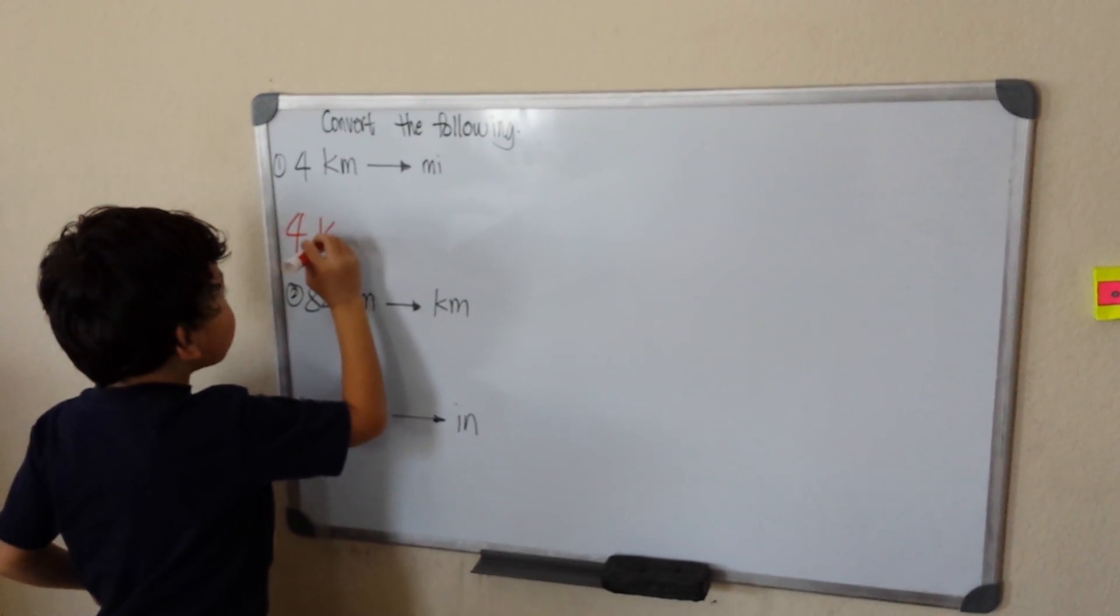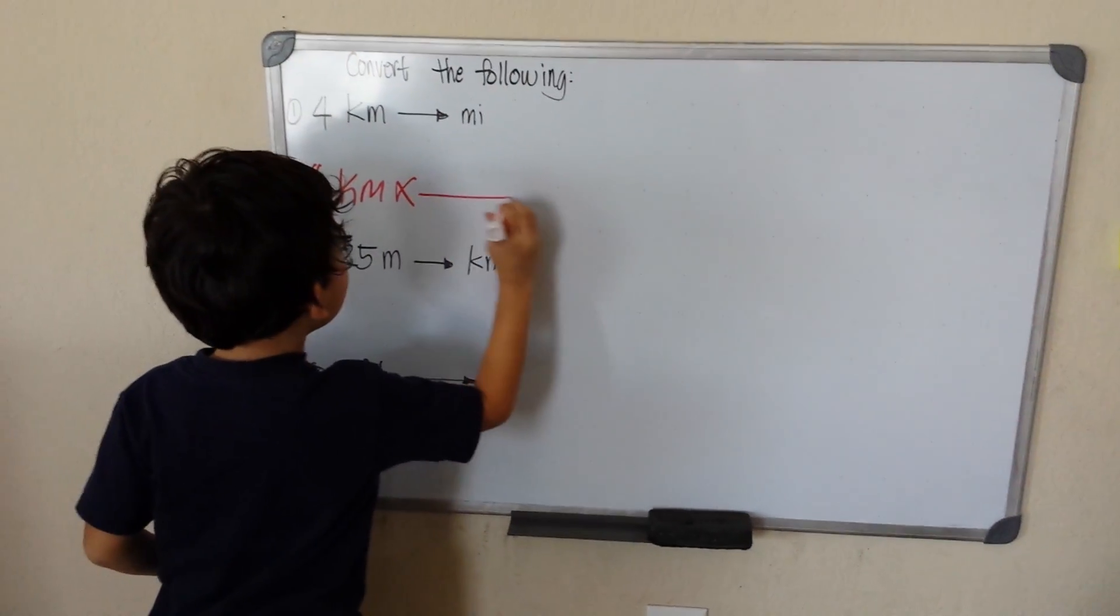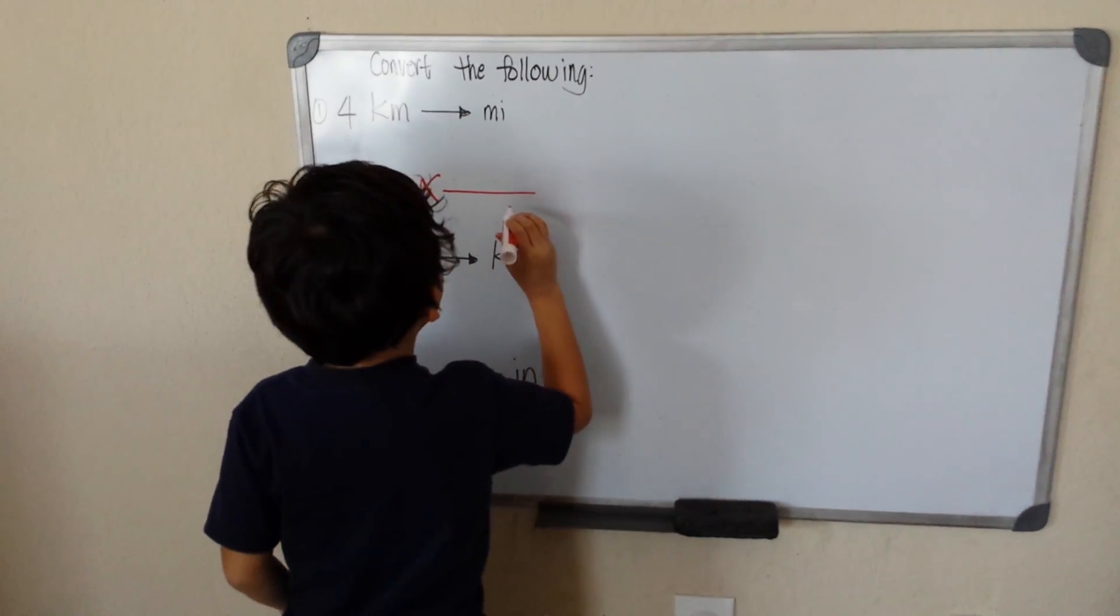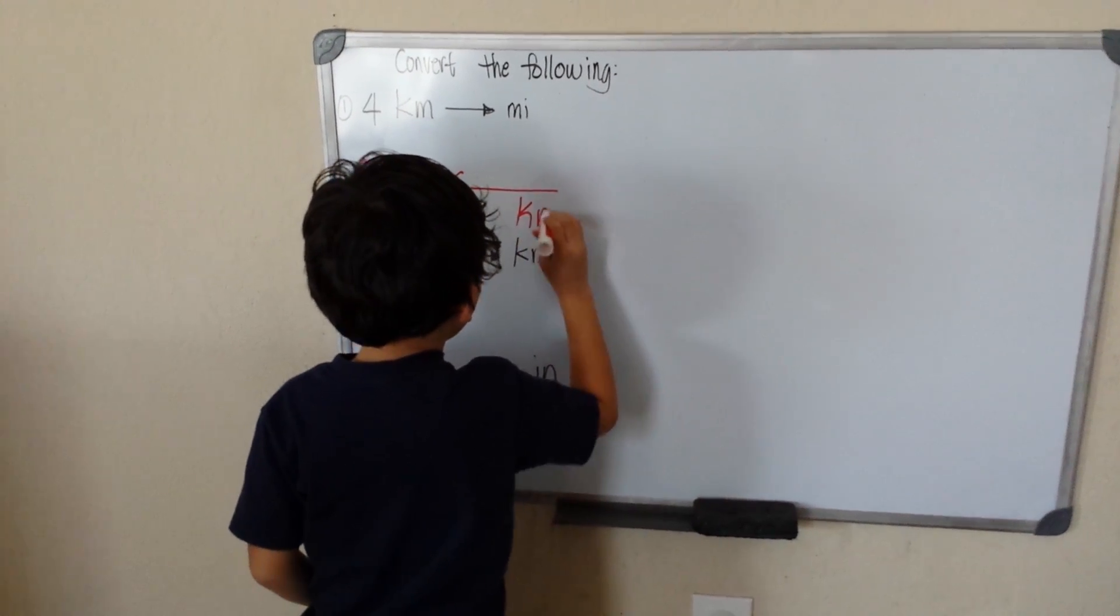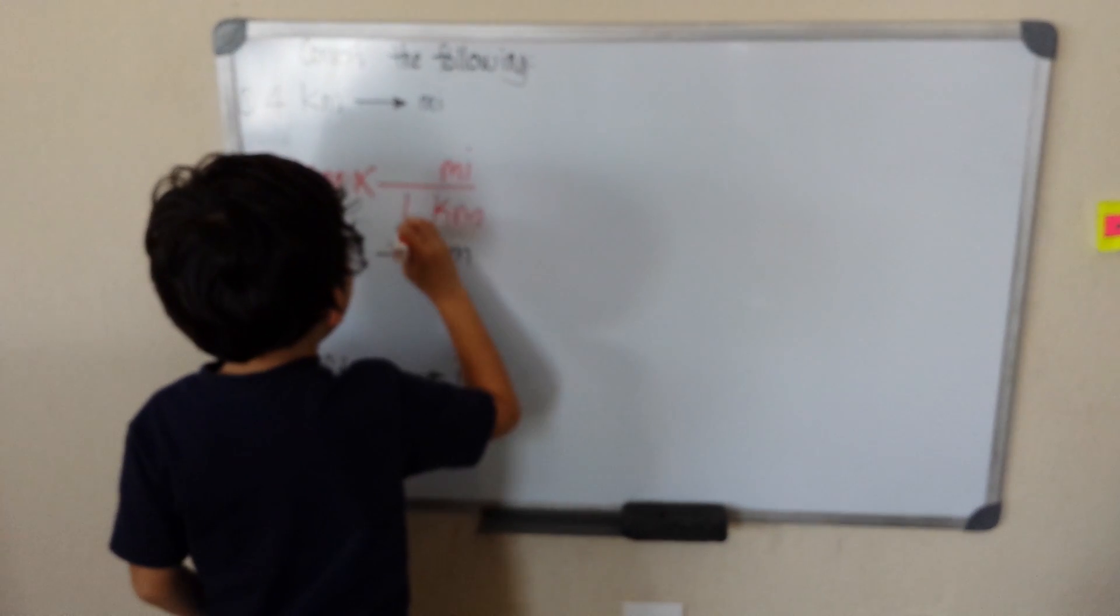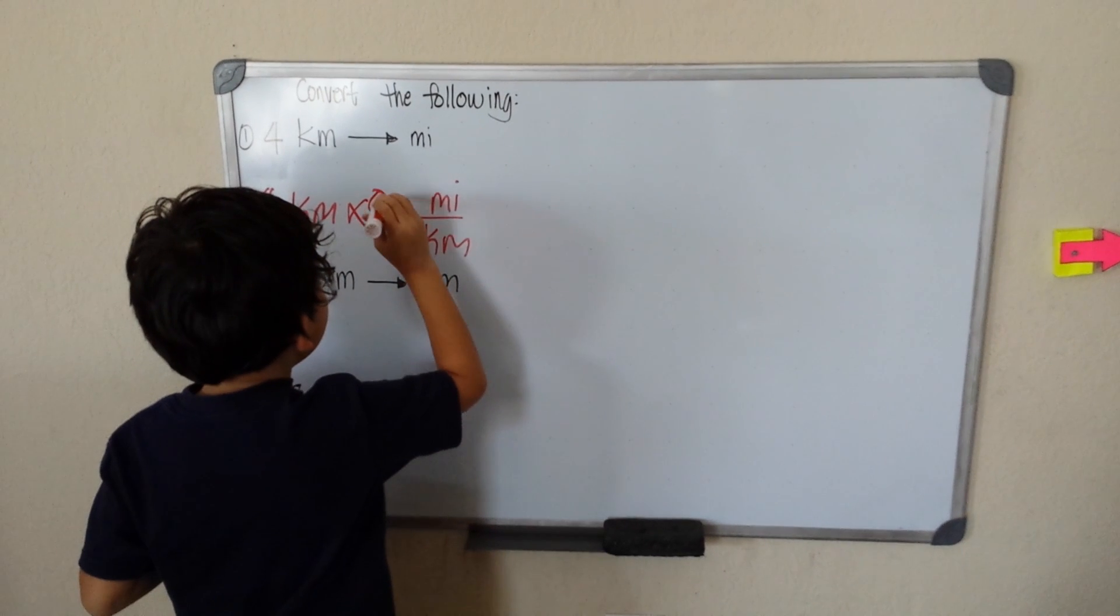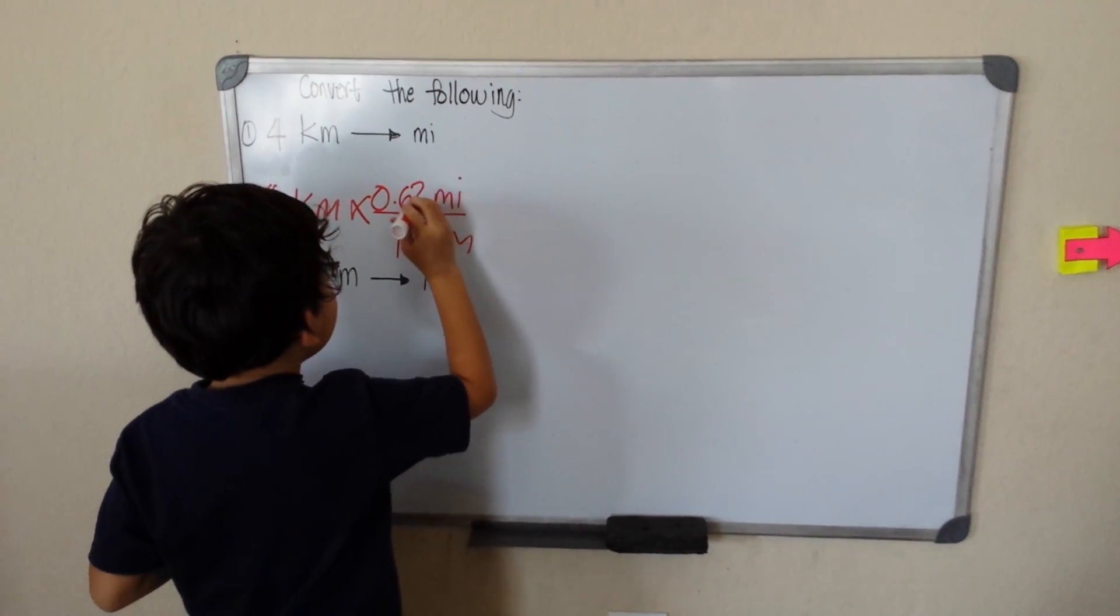4 kilometers. Times kilometers. When 1 kilometer, how many miles? 0.621.